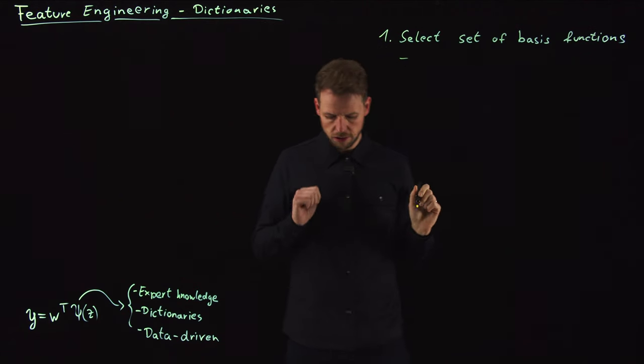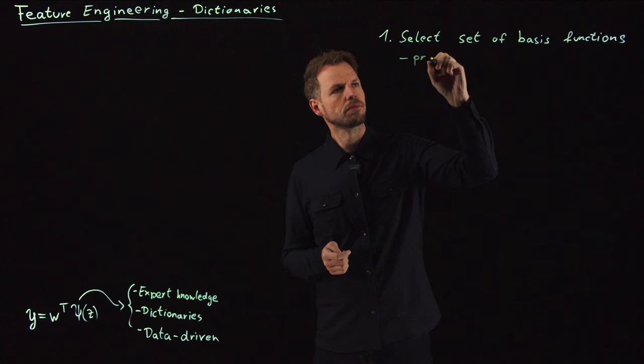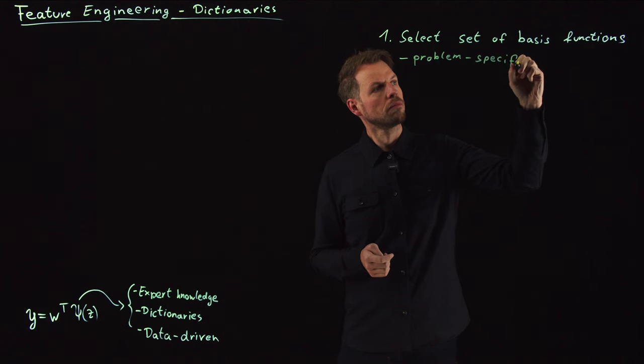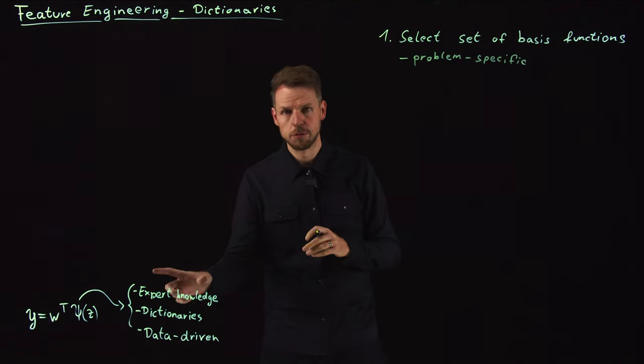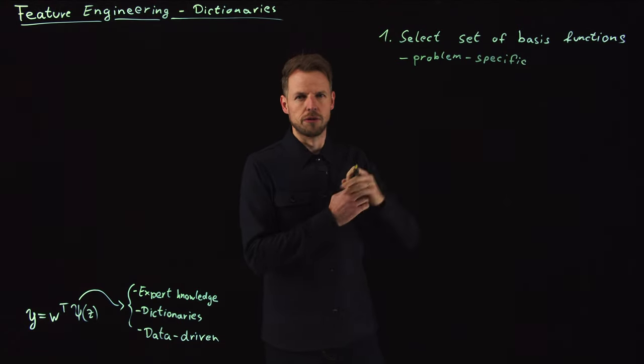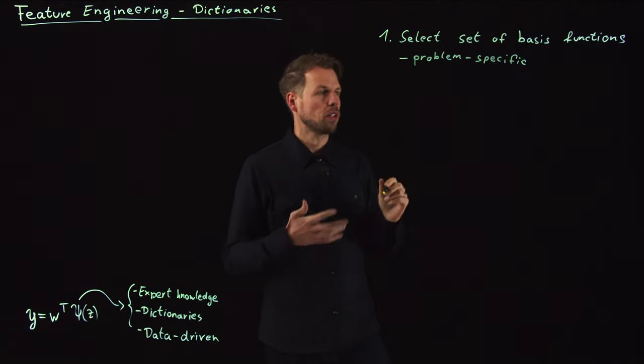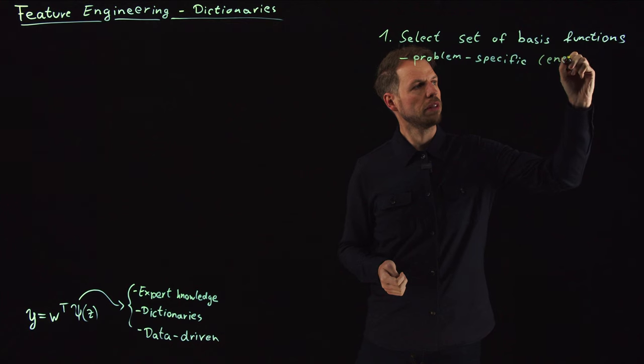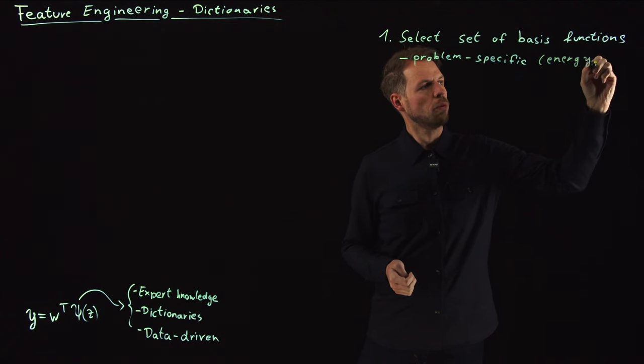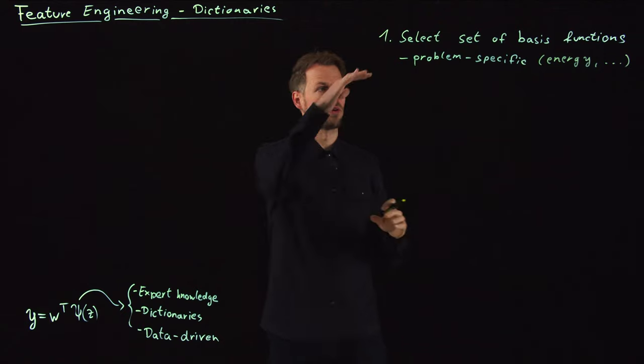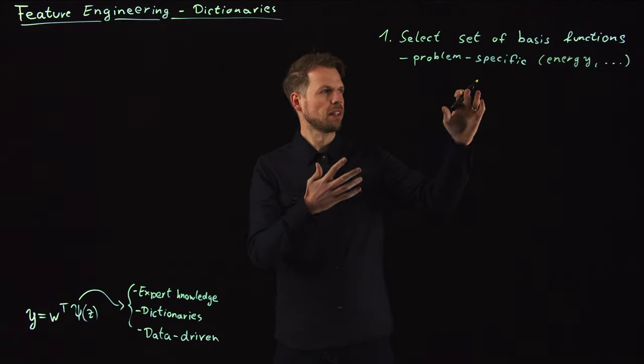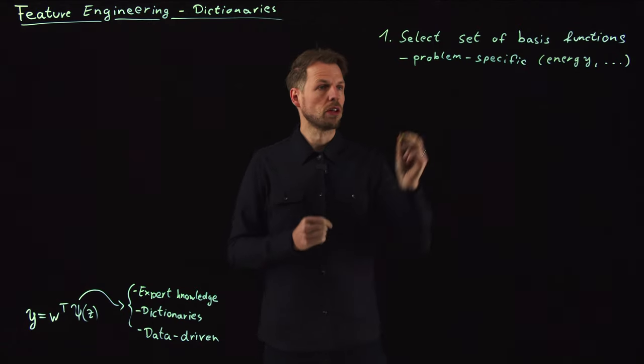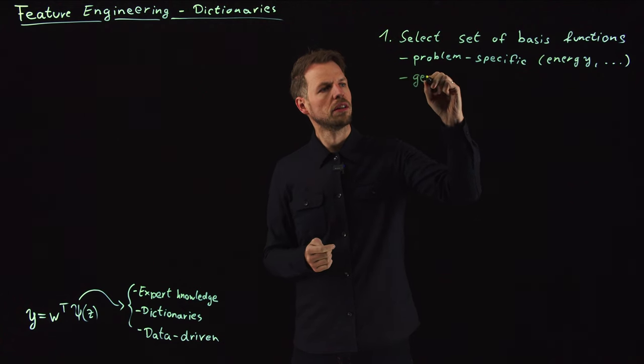How do we select these basis functions? They can be problem specific, and this again has a very close connection to this expert knowledge thing. So you define functions that you put in your dictionary that concern some quantity that you are really interested in, like, and we had this in the video before, energy, momentum, and so on. So some transformation that yields data or quantities that are of particular interest and very tailored to your problem. But you can also, alternatively, pick generic functions.